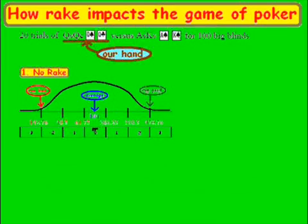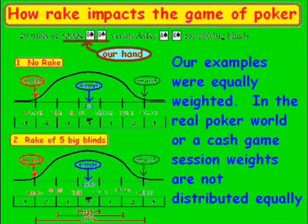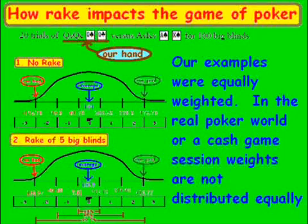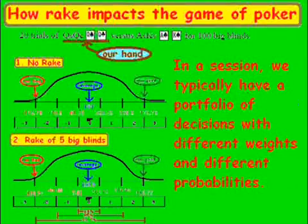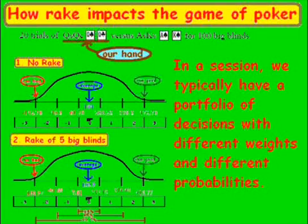One core concept to recognize is that our examples are equally weighted, but in a real poker cash game session, weights are not distributed equally. In a session, we typically have a portfolio of different decisions with different weights and different probabilities, so it doesn't come out as evenly as our distribution. Over time, with a large sample of decisions it will even out, but it won't in the short run.